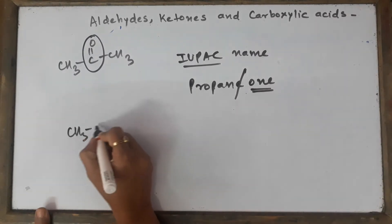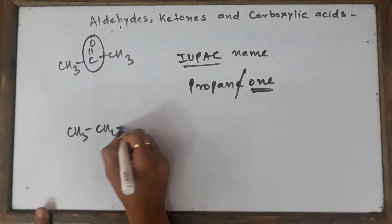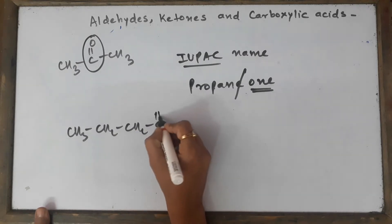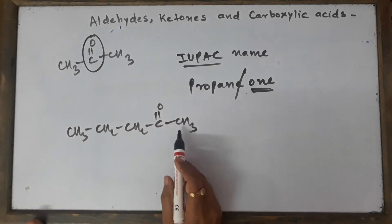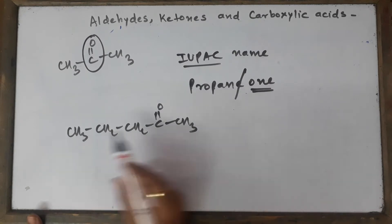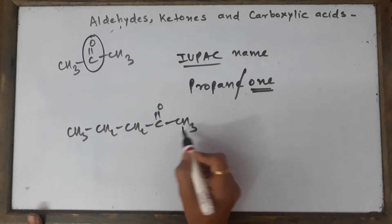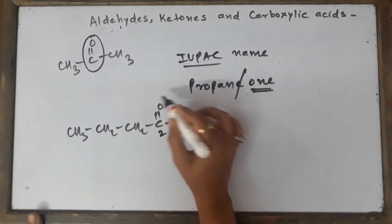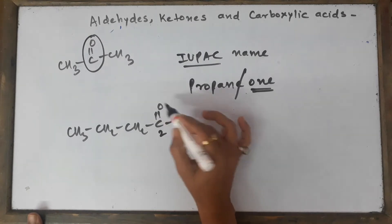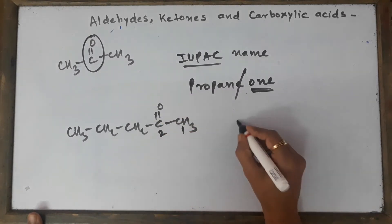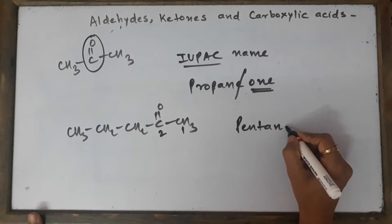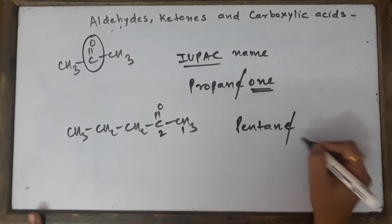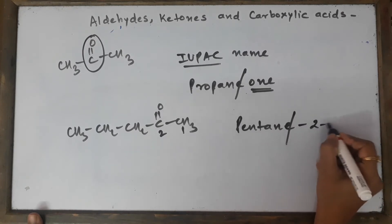One more example: CH3, CH2, CH2, C double bond O, CH3. So here, how many carbon atoms are there? You can see 1, 2, 3, 4, 5. Start numbering from this side because this carbonyl group should get the least possible number. So it becomes five carbon atoms — it is pentane, so remember to remove this E and write 2-one. The name is pentan-2-one.